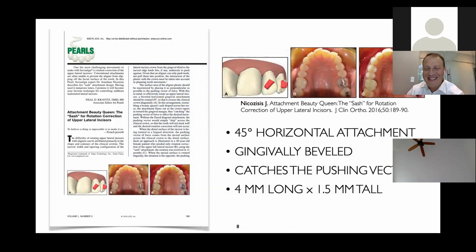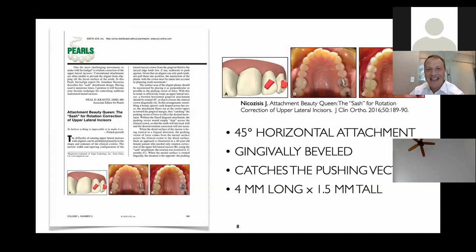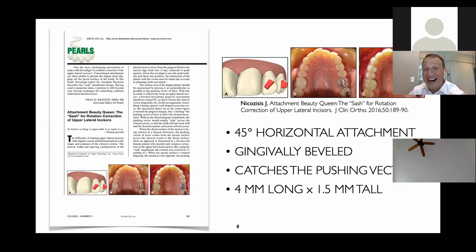Let's start with the greatest pearl of the last five years — really the essence of a pearl, which is to take something so simple and just tweak it a little bit. This comes from my great friend Dr. Jonathan Nicosesis, truly one of the great teachers and writers. This is his beauty queen sash attachment. One of the least predictable movements is extrusion and rotation of the lateral incisor — the aligner simply does not track well. Many times we have to transition Invisalign patients into one or two months of fixed appliances just to move that lateral.